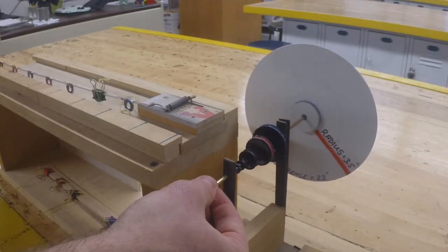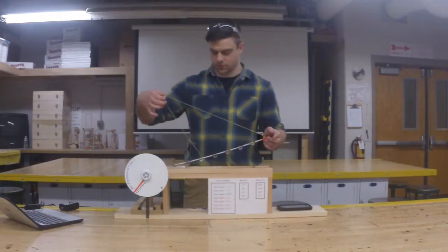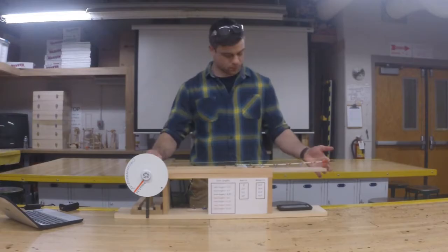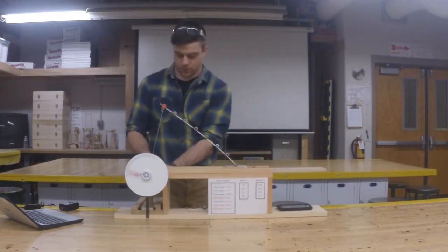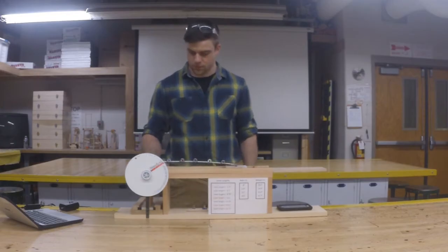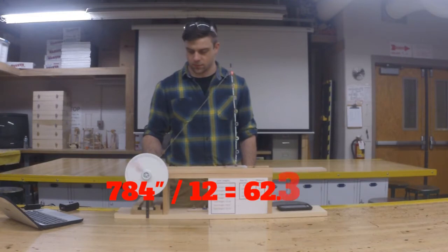By using a longer lever arm, we're able to pull much more string from the axle. The string turns the wheels 34 times. At 22 inches per revolution, that means that in 34 revolutions the car would move 784 inches or 62.3 feet before running out of power.